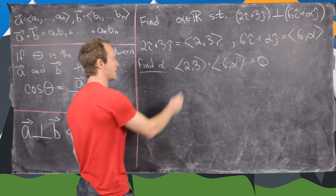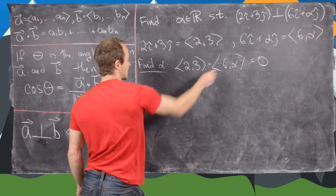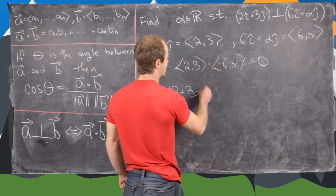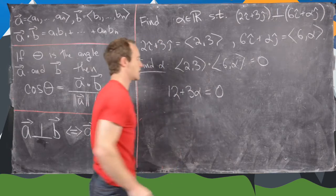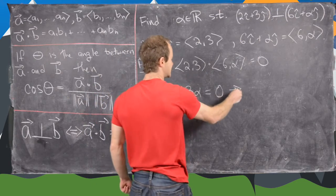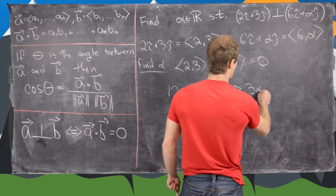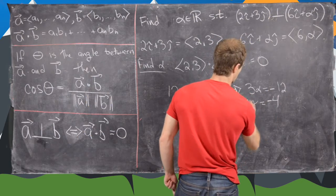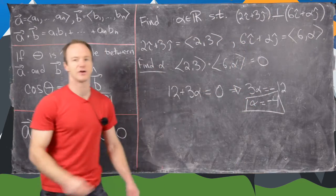But then by the definition of the dot product, this becomes 2 times 6, which is 12, plus 3 alpha equals 0. But then it's not too hard to see that this means 3 alpha equals minus 12, which means alpha equals minus 4. So we have a value for alpha.